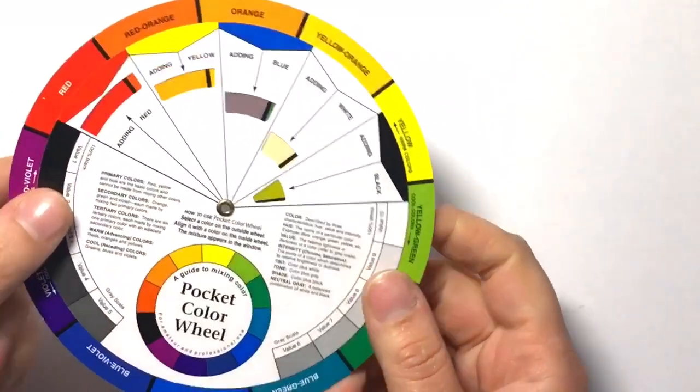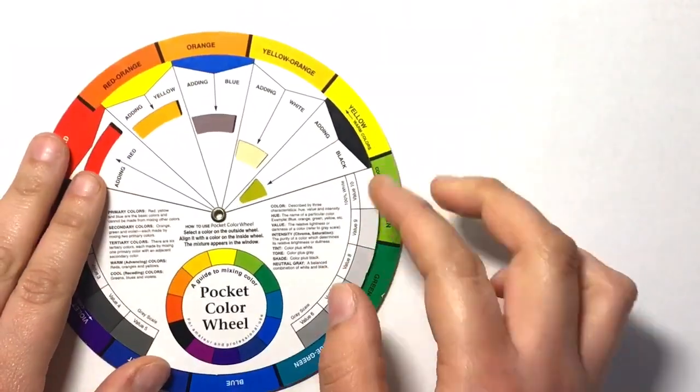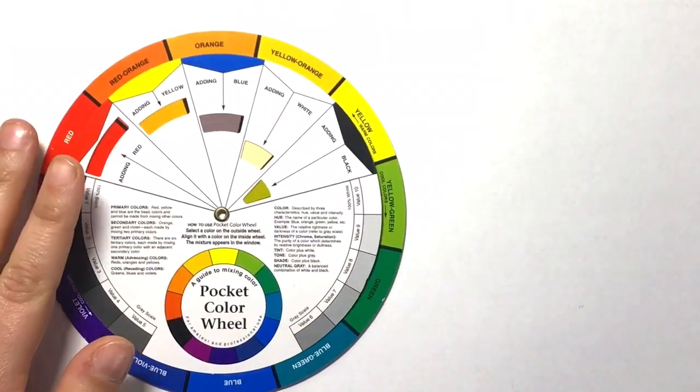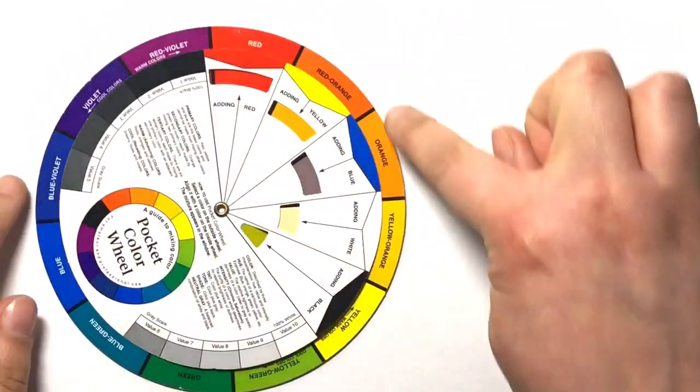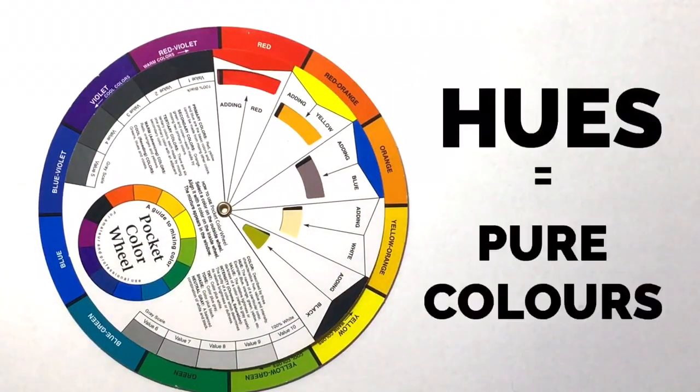Now this one I have here is quite complex looking, but don't worry about that. Ignore all the little boxes and bits for now and let's just concentrate on the basic colors that run all the way around the edge. These are called hues, which is just another word for pure colors.